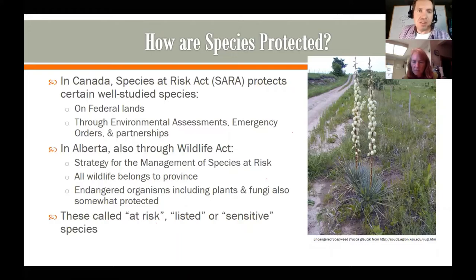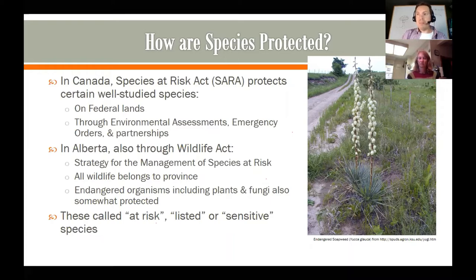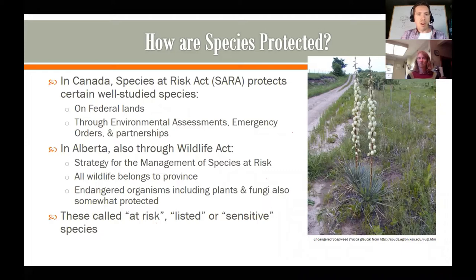The next topic is how are species protected? How do we in Canada and in Alberta protect species? Certainly there are protected areas — we can protect species by protecting land, and that's definitely great. But what we're going to talk about here is how do we make sure that individual species don't go extinct and are protected that way. Federally, our Canadian government has passed the Species at Risk Act — I'm going to use the acronym SARA — and what is protected by SARA is certain very well studied species that we know are in serious, serious trouble.